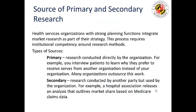Health services organizations with strong planning functions integrate market research as part of their strategy. It's important to have individuals on your leadership team with competencies around market research — that's an expectation for a planner whose work is really around planning. There are two types: primary and secondary. Primary research is simply research that you conduct yourself as an organization — even if you outsource it, it's your data. Secondary research is conducted by another party but used by the organization, such as when a hospital association releases an analysis outlining market share based on Medicare claims data. You use that information to inform your strategy.